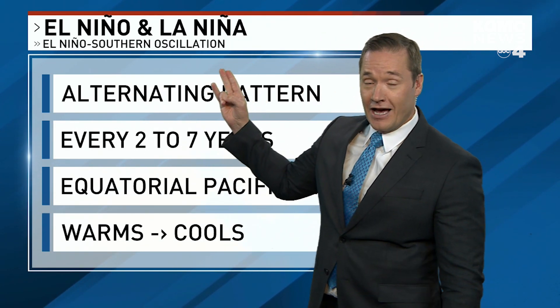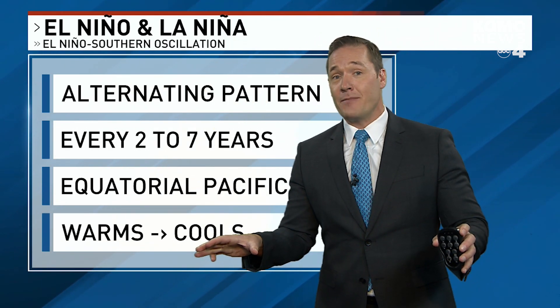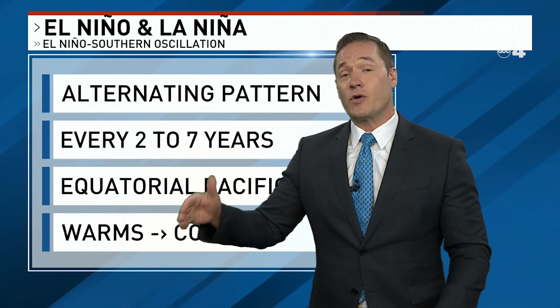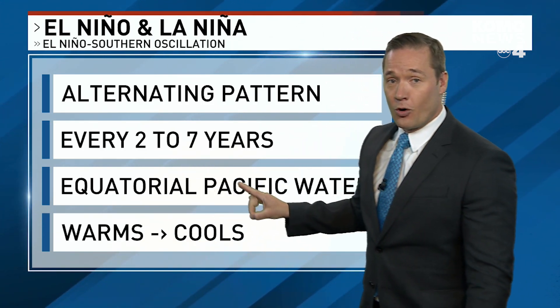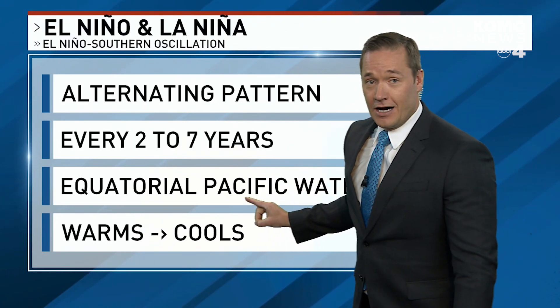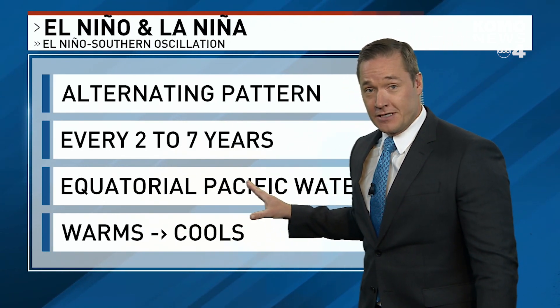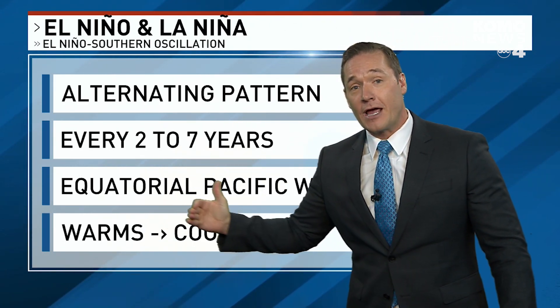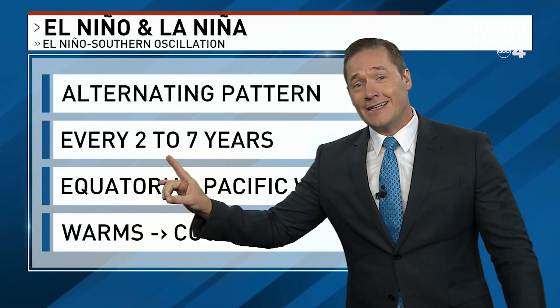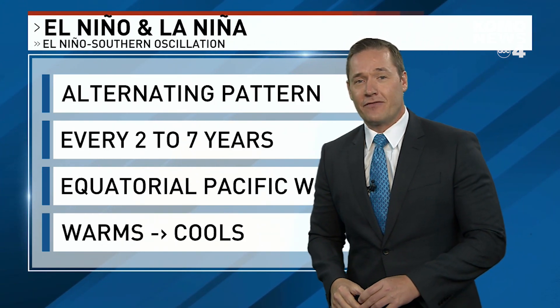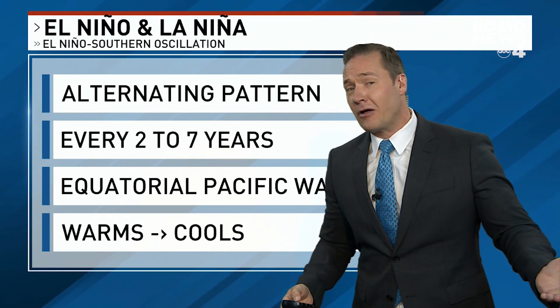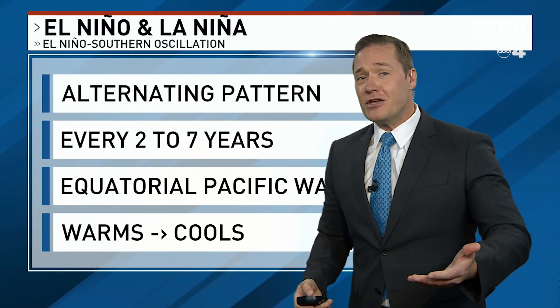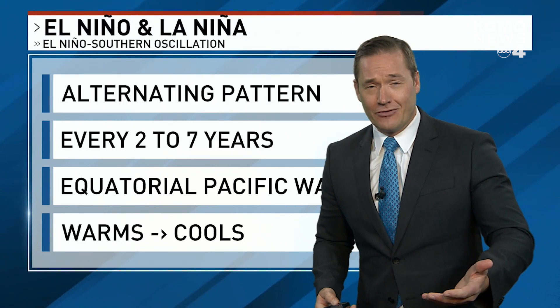The other half being La Niña. This is a climate pattern alternating between warmer than normal and cooler than normal equatorial Pacific waters. They tend to do this every two to seven years, although there's no set schedule. You could have multiple years in an El Niño, then only one year in a La Niña, and then go back to El Niño. There is a lot of variability here.